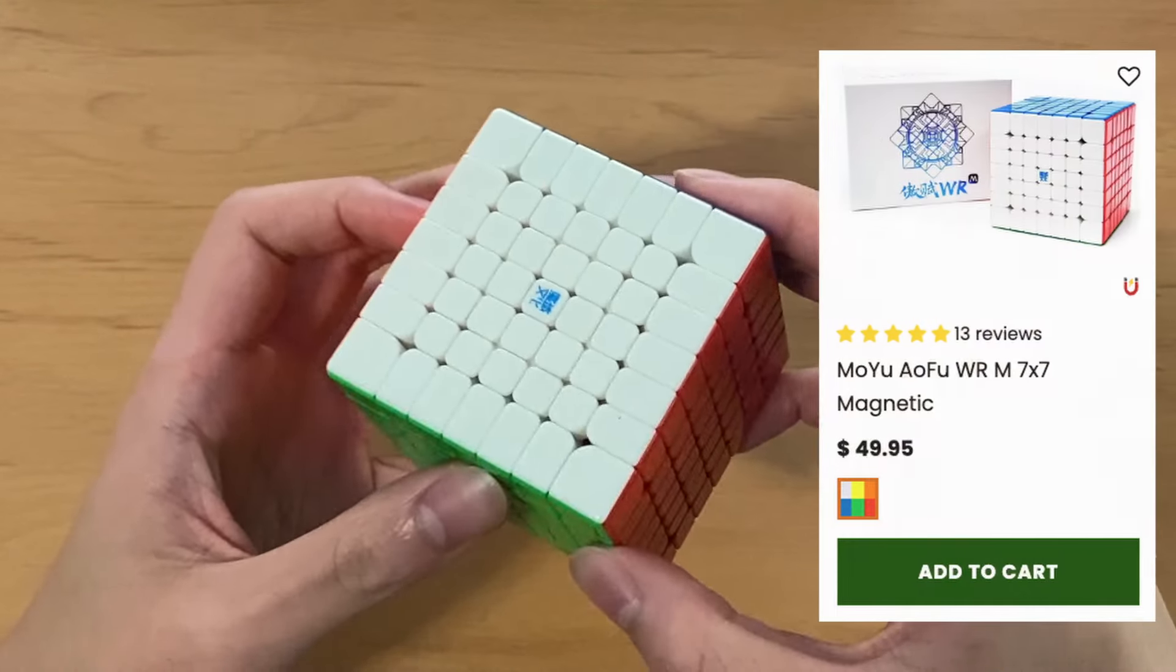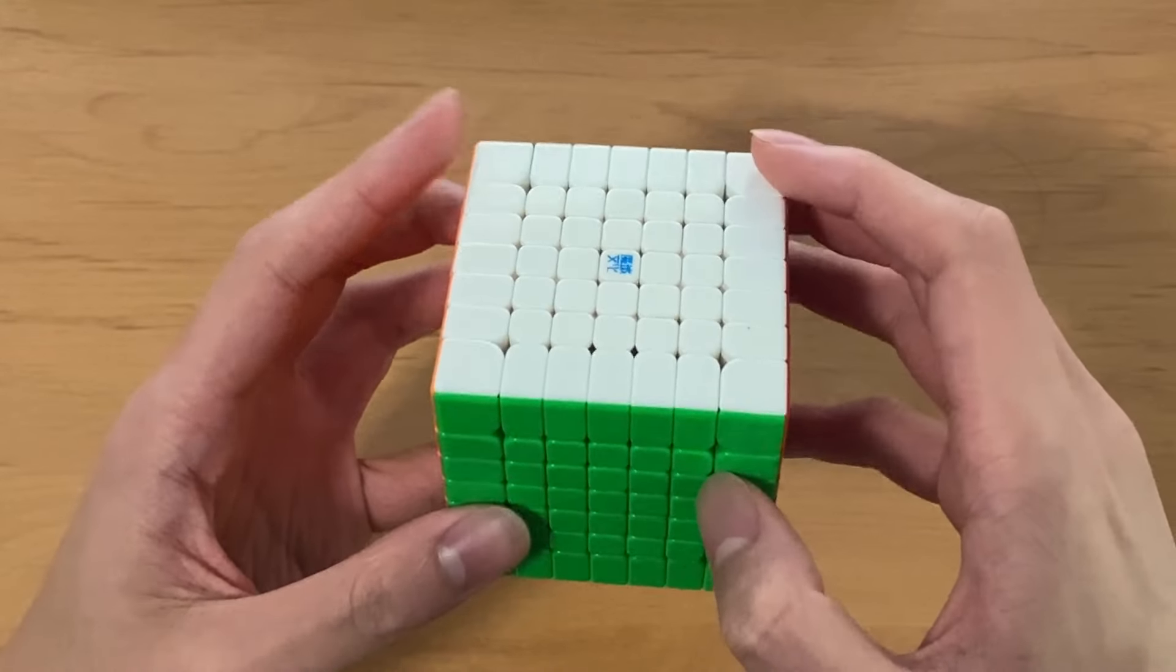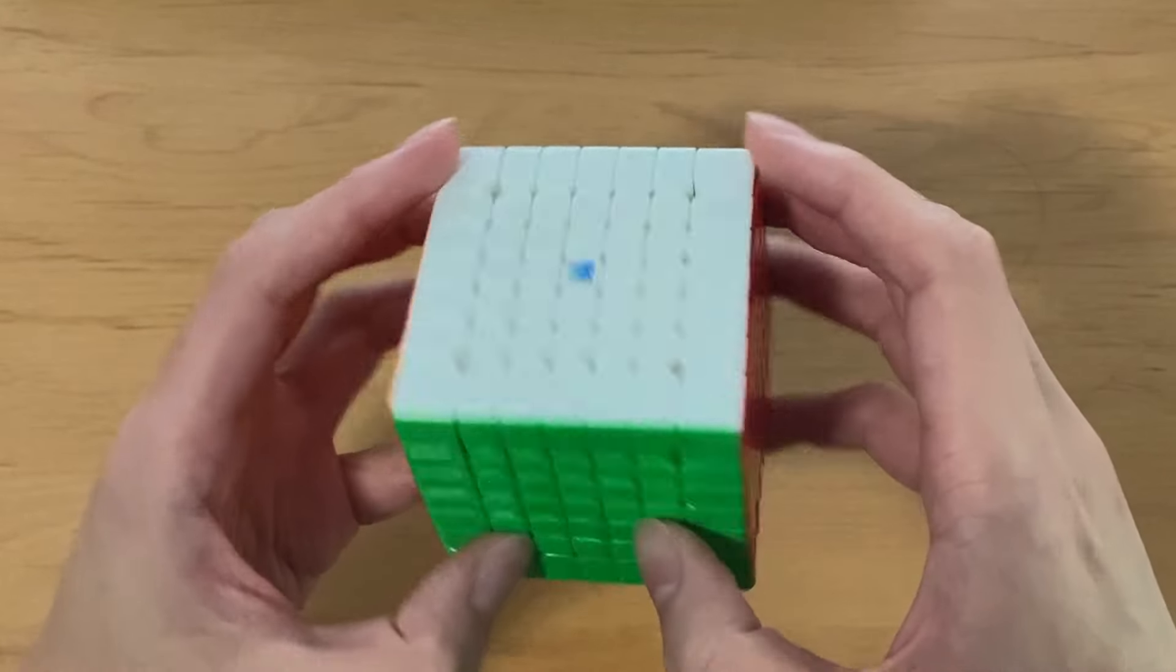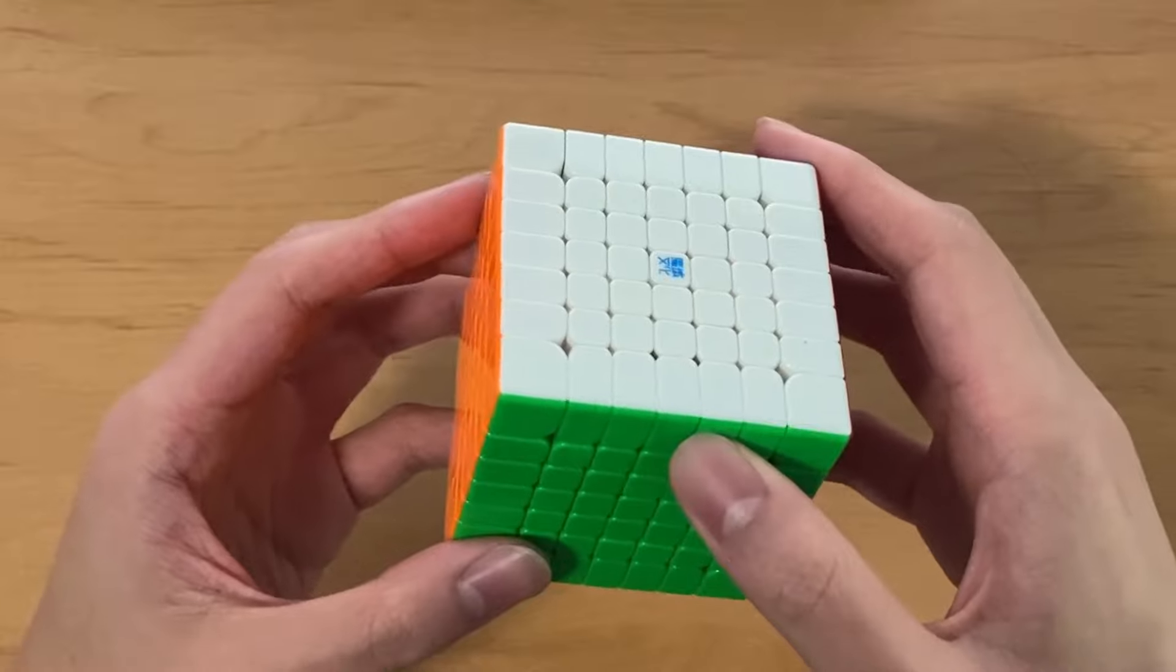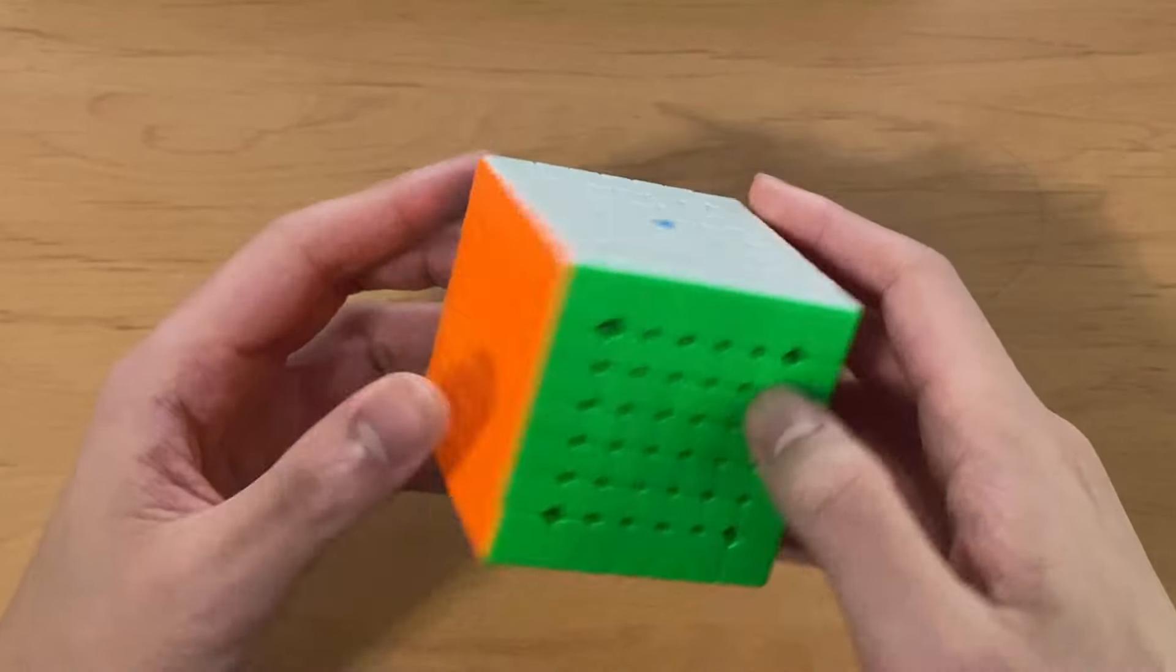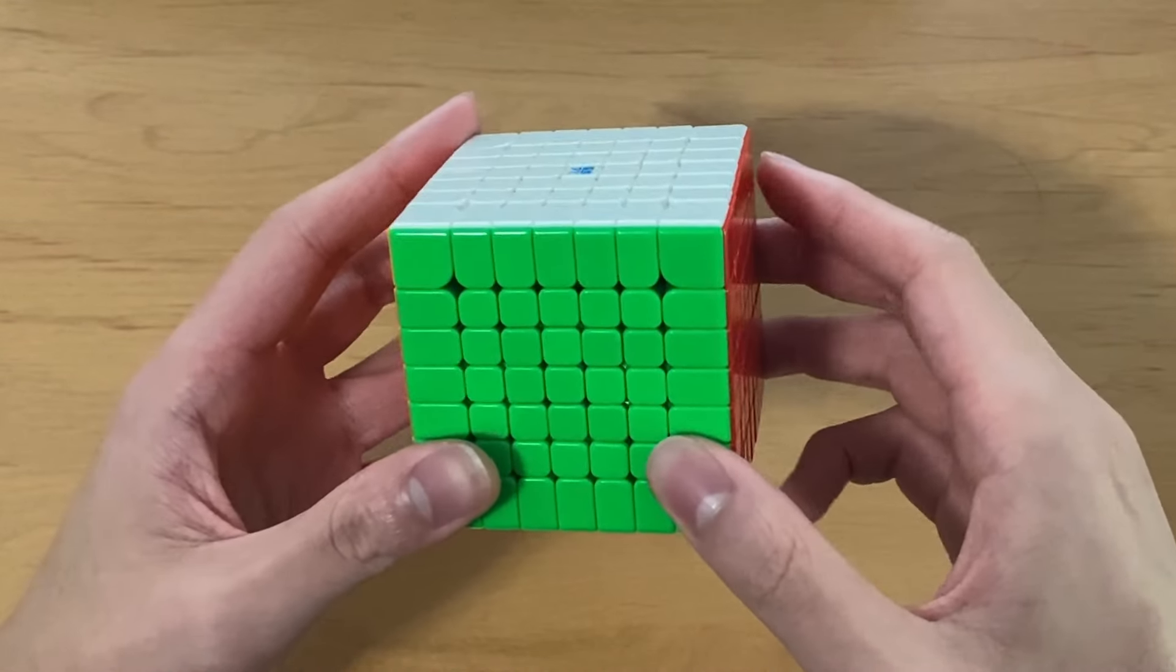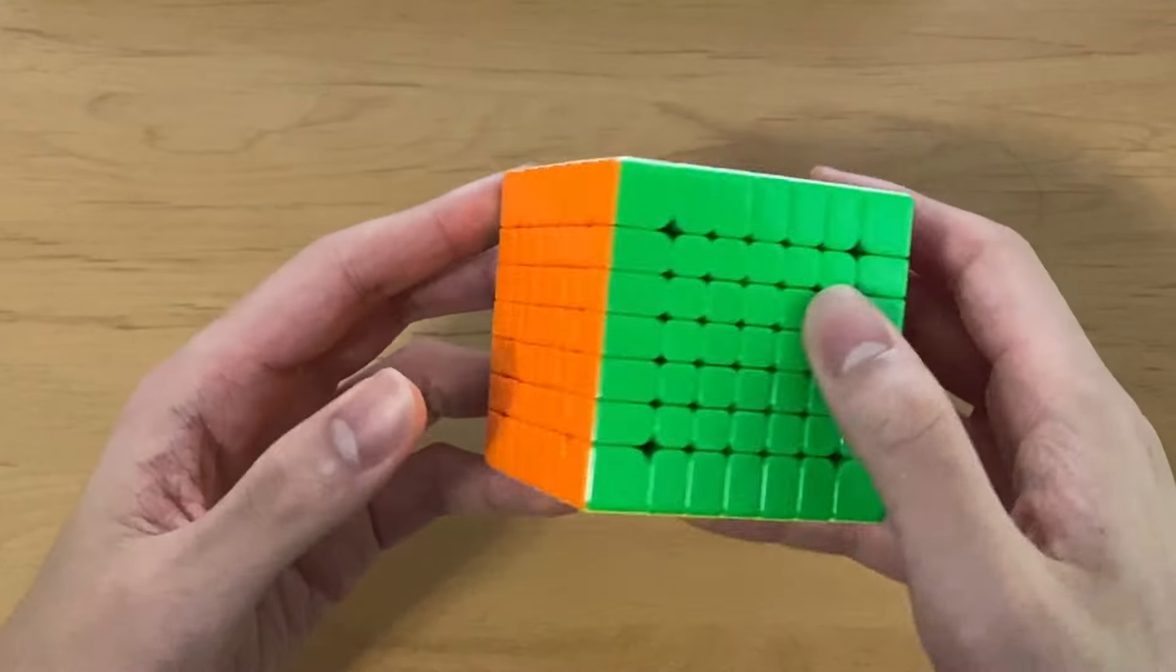For 7x7, I use the Moyu Aofu WRM. Again, this is probably by far the most dominant 7x7 on the market. There is also the MGC7, which is a very good cube as well, especially at a more budget price, but I think most people agree that the Aofu WRM is significantly better. I've been maining this ever since it came out, and I've been able to get all my PRs on it.